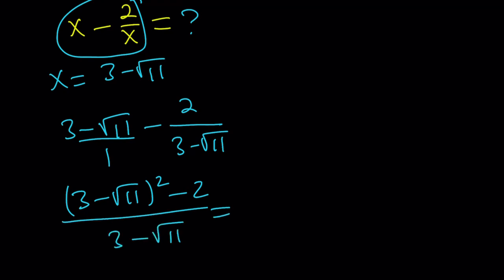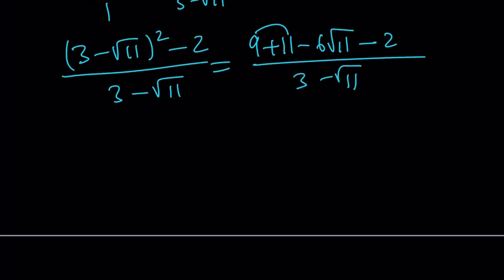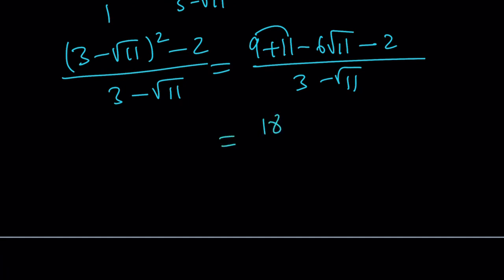If you expand it, you're going to get 9 plus 11 minus 6 root 11 minus 2 divided by 3 minus root 11. 9 plus 11 is 20, minus 2 is 18 again. This is 18 minus 6 root 11 divided by 3 minus root 11.